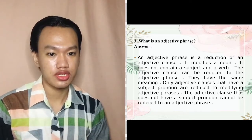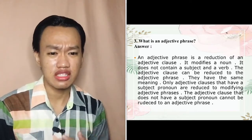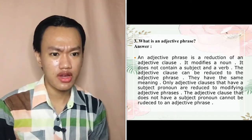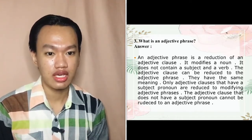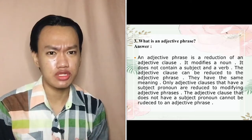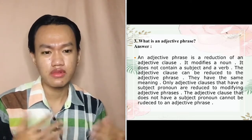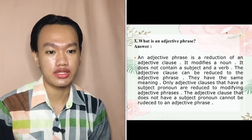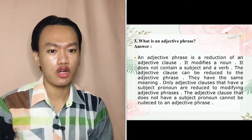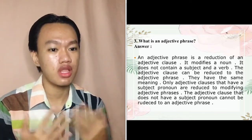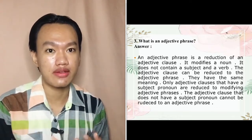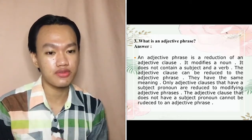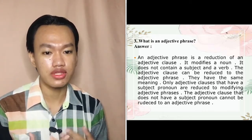The third question is: what is an adjective phrase? My answer: an adjective phrase is a reduction of an adjective clause. It modifies a noun and does not contain a subject and a verb. The adjective clause can be reduced to an adjective phrase with the same meaning. Only adjective clauses that have a subject pronoun can be reduced to modifying adjective phrases.